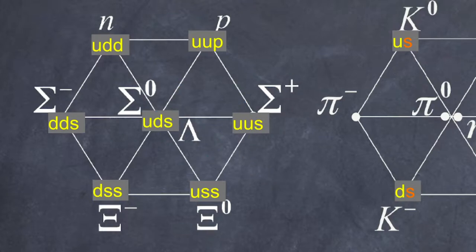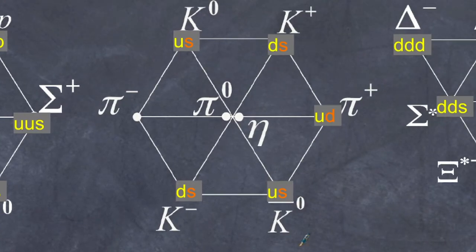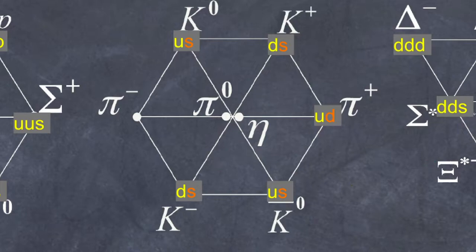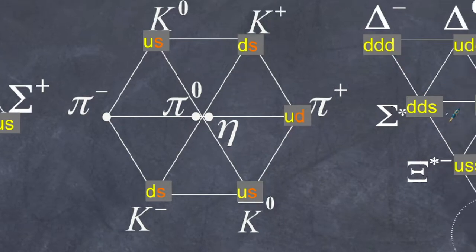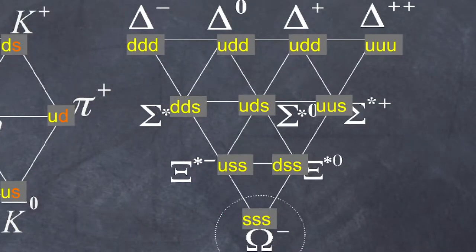Those that had spin 0 are our mesons. You can see what we have here is our up quark and our strange quark — the changed color is meant to show that this is an anti-strange, an anti-particle. And then on the other side, we see all these particles with spin 3/2, and again they're made up of a whole range of quarks in different combinations.